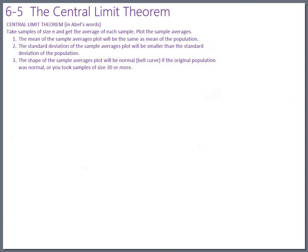Now that we have the theoretical underpinnings of the Central Limit Theorem, let's see how it works out in practice. I wanted to just recap it quickly in my own words. The idea is you've got some population and you take samples from it — samples of size n. We did samples of size 5 in the last video. You get the average of each sample and then plot all of those sample averages. The Central Limit Theorem says three things will happen when you do that process.